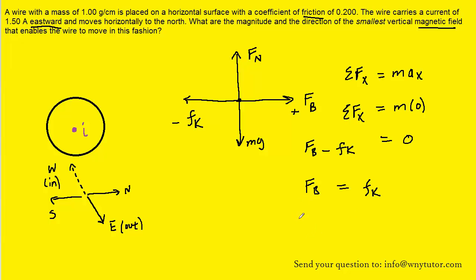We know from this chapter that the magnetic force is equal to the magnitude of the magnetic field multiplied by the current, multiplied by the length of the wire, and then multiplied by the sine of an angle. That angle will be between the magnetic field and the current. The kinetic frictional force is the coefficient of kinetic friction times the normal force.